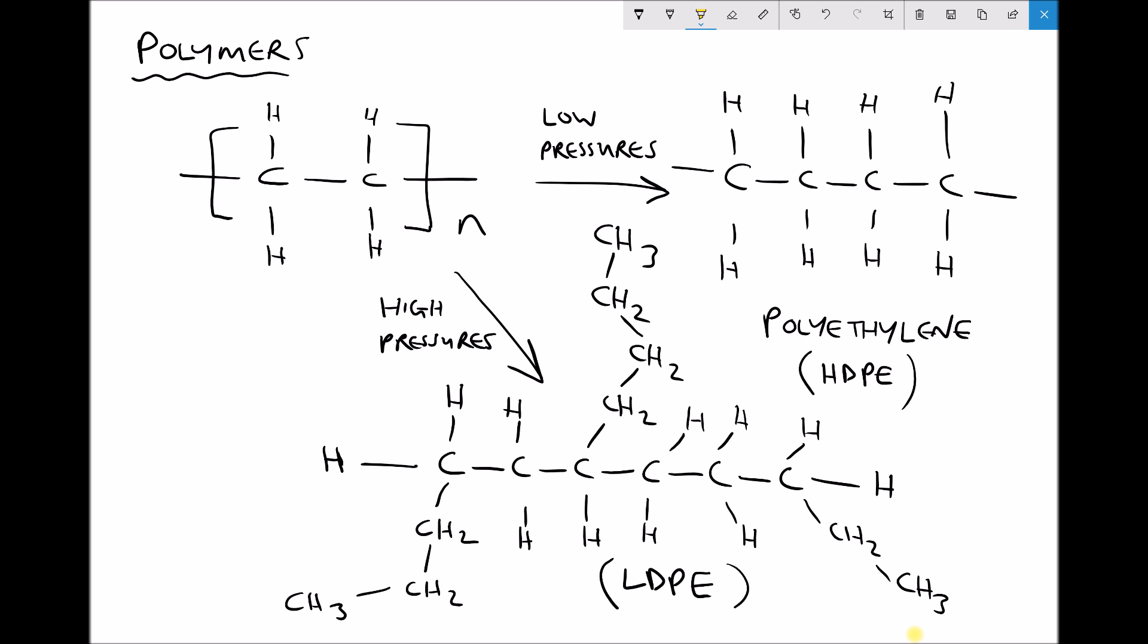The important thing to point out is the main thing we've changed here is the pressures that the polymers are being produced at. So by changing the conditions we can change whether we're producing a linear polymer or a branched polymer. And this will be true for various other different polymerization reactions.